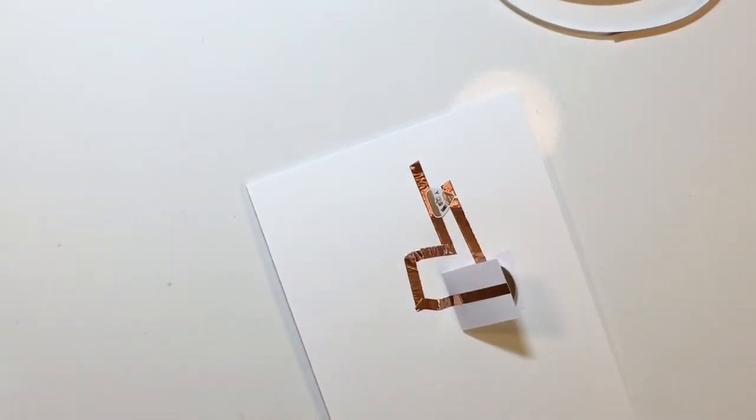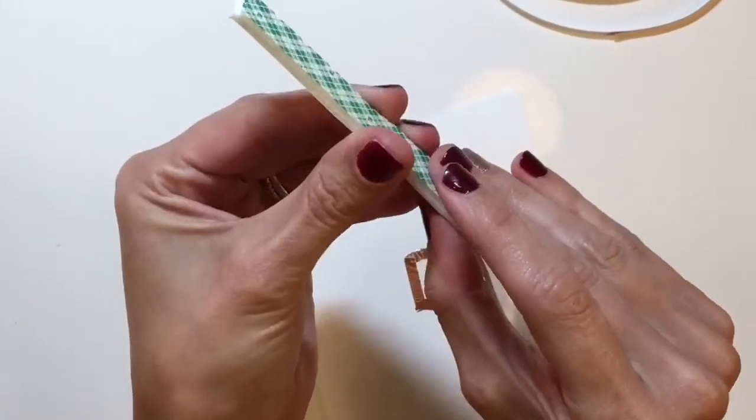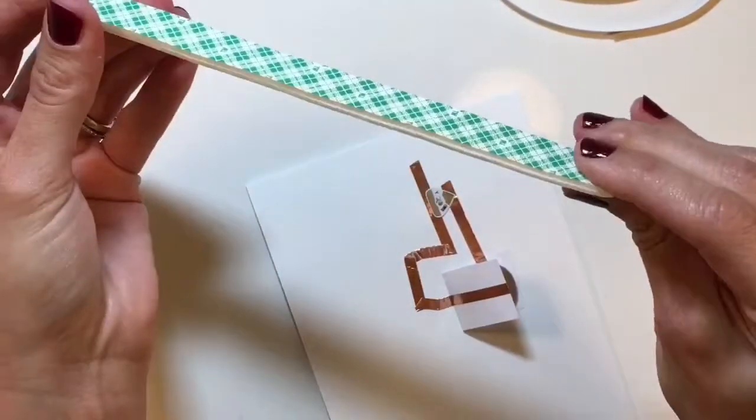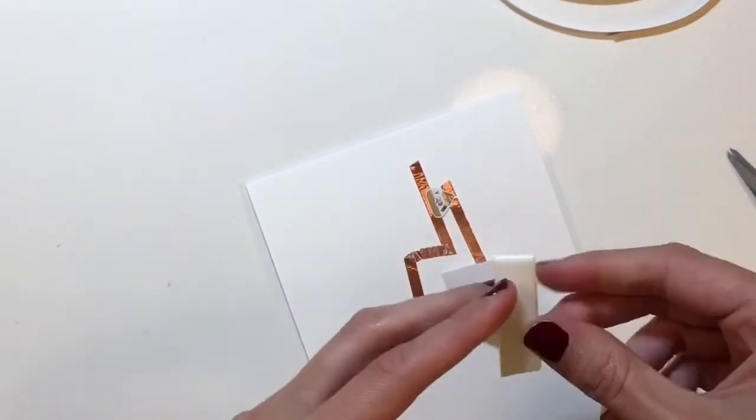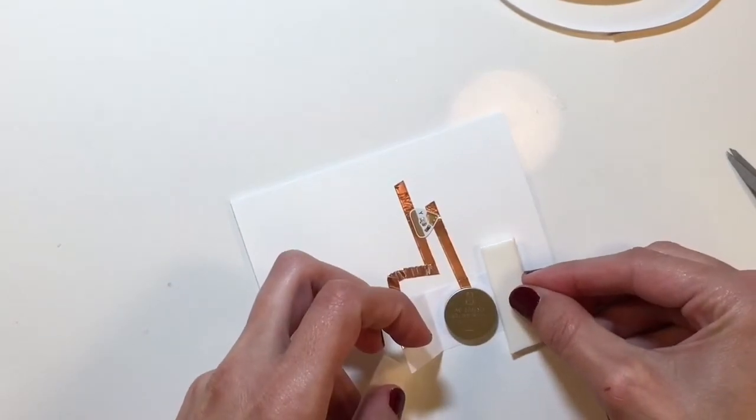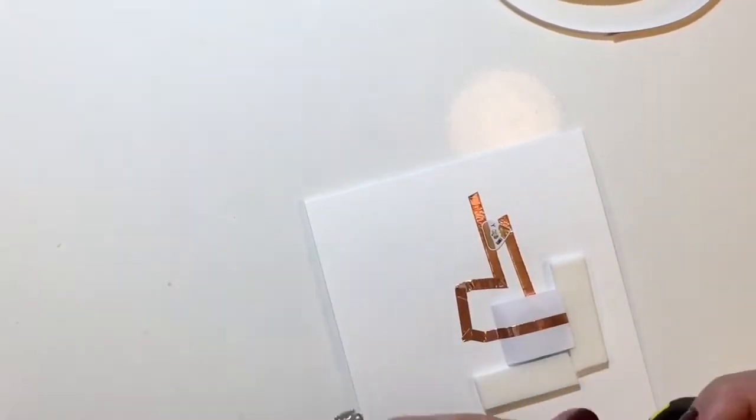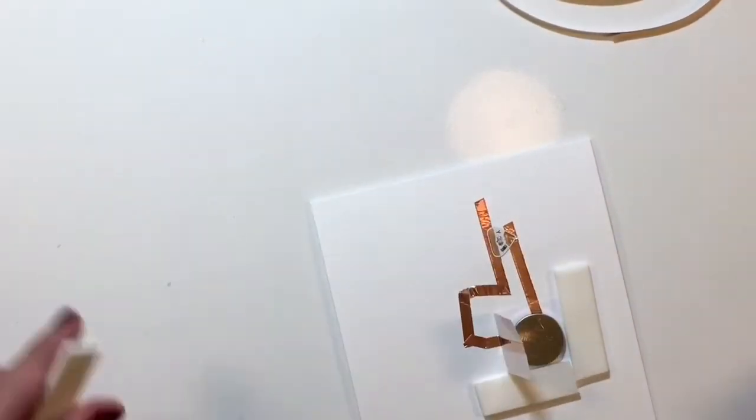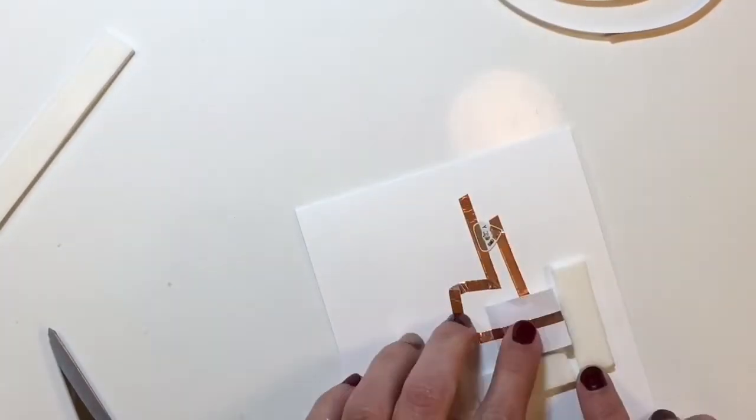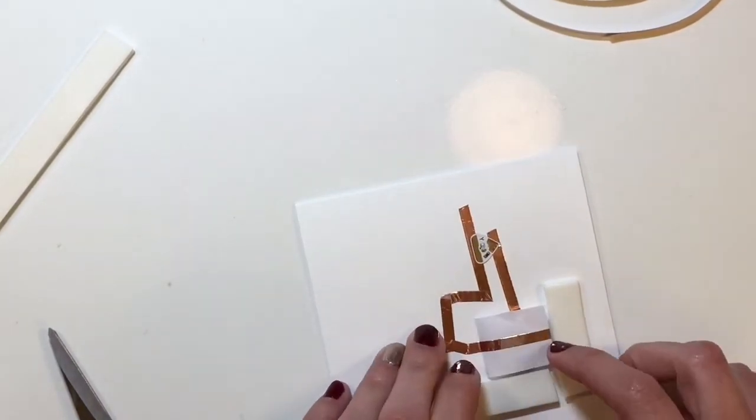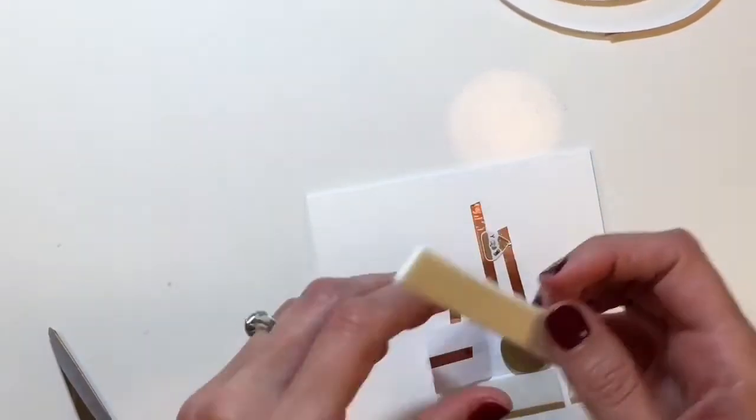So the next part of using these Chibitronics on a card, an interactive card, is making sure that you have housing around the battery so the battery doesn't slip around. And also making sure that you have your layer, your card layered up high enough so that you can continue to push that button and still have room for the button to release itself. All that means basically is you need to have at least three layers of foam tape. Right now I'm doing a double layer and I'm going to put that around the housing to hold the battery in place.